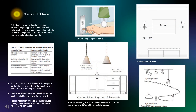There are some guidelines when it comes to mounting and installation of light fixtures. It's important to talk to the users of the space so that the location of the lighting controls are within reach and readily accessible. Each zone should be separately circuited and each task light should have its own switch. Proper installation involves mounting fixtures directly to the building structure to avoid the risk of falling luminaires. Building energy codes may require that each head on the track be counted as a separate fixture when dealing with track-mounted fixtures. The mounting height in a residential area should generally be between 30 to 40 inches from the countertop, and if applying multiple fixtures, they should be at least 30 inches apart.